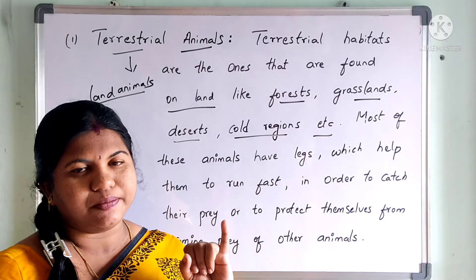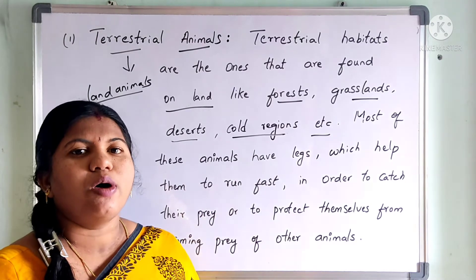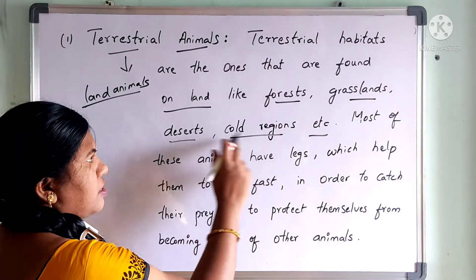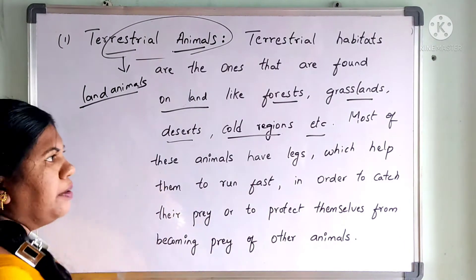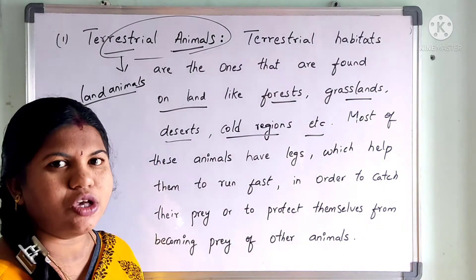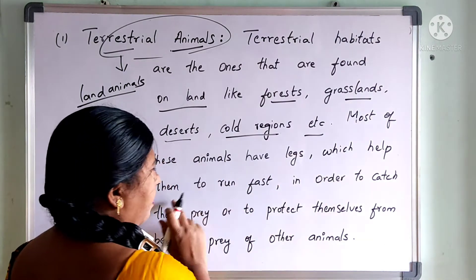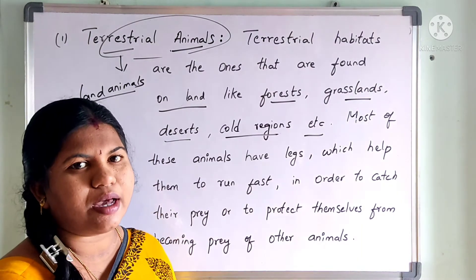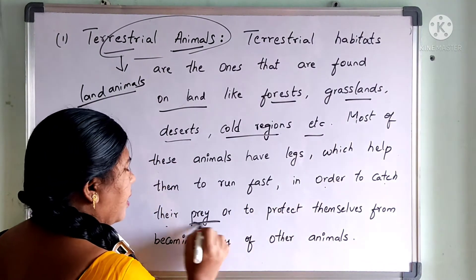You can find the forest, the grassland, cold regions, and deserts — there are many places on the land. All animals living in the different places on the land are referred to as terrestrial animals or land animals. Most of these animals have legs which help them to run fast in order to catch their prey.